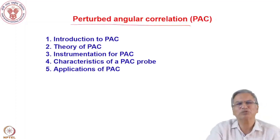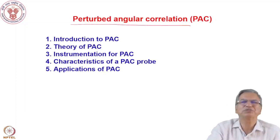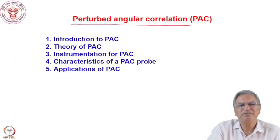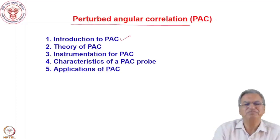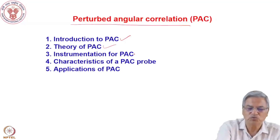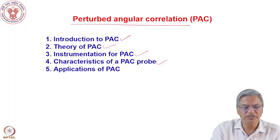This is more like Mössbauer spectroscopy, wherein we study the angular correlation between two gamma rays and determine the electric field gradients and electronic environment in different types of materials. In this particular lecture, I will introduce the topic of PAC, then the theory behind the perturbation correlation, the instrumentation for perturbation correlation, the requirements for a radioisotope to be used as a probe for PAC, and some applications of PAC.